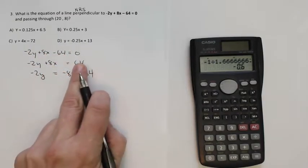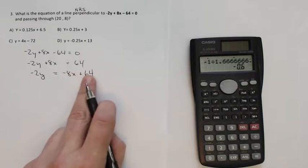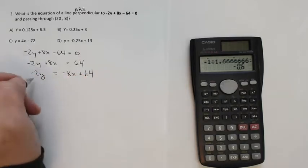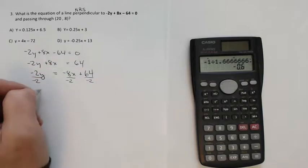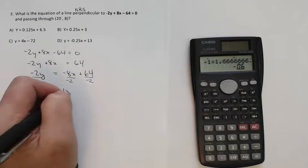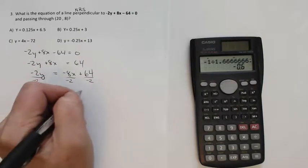I subtracted 8x here and subtracted 8x here. Those two terms don't mix. Divide everything by negative 2, and you're left with y is equal to 4x minus 32.